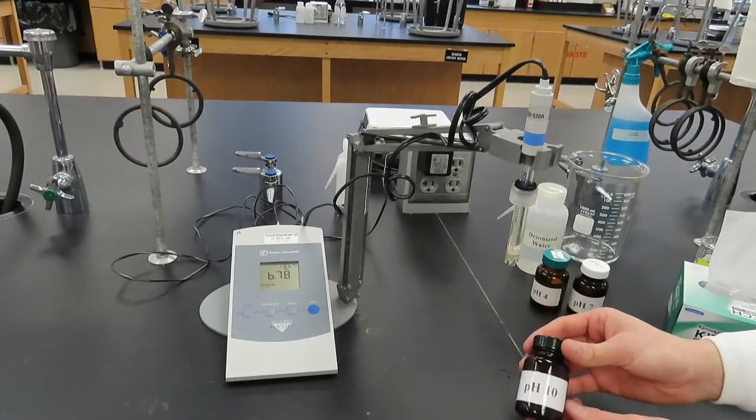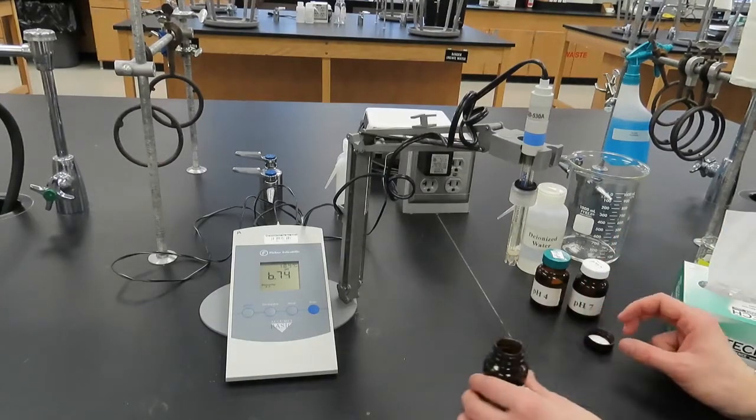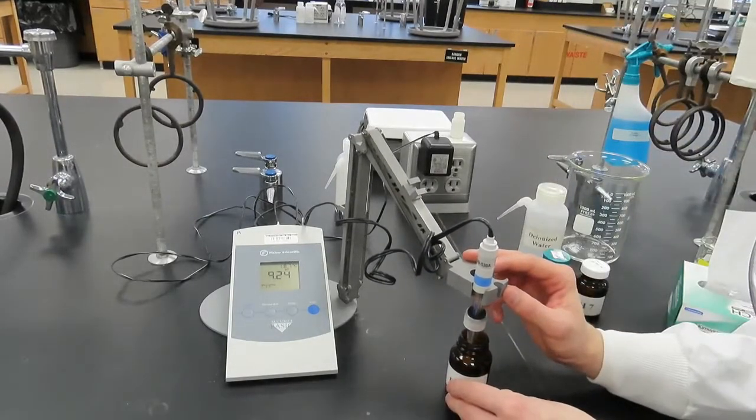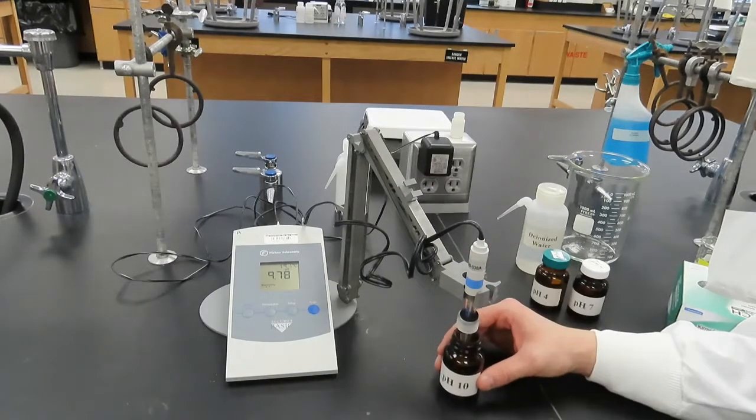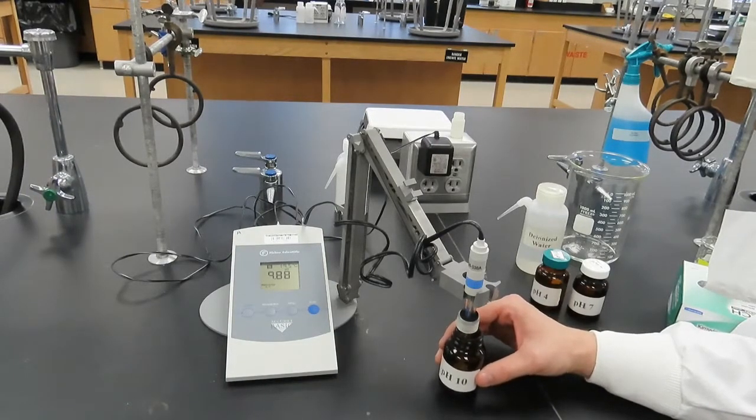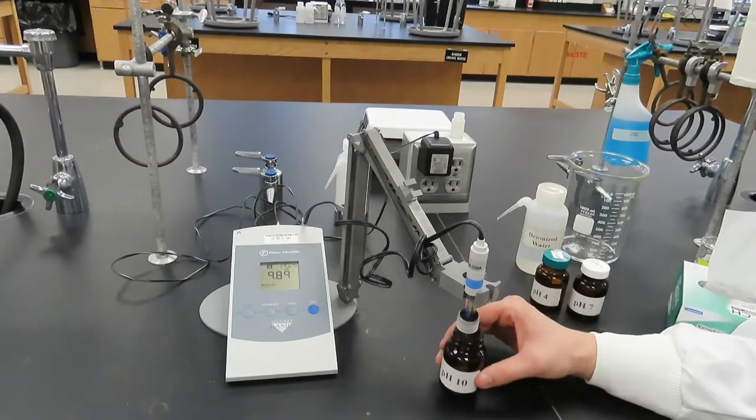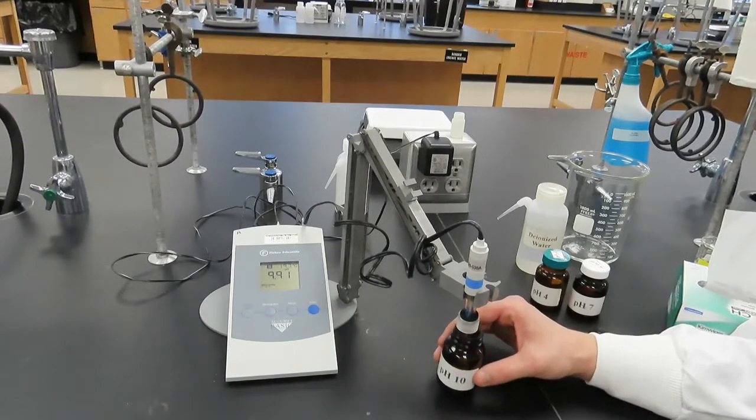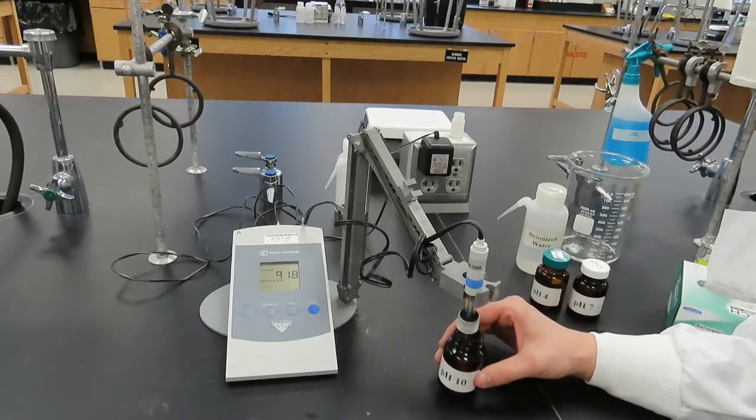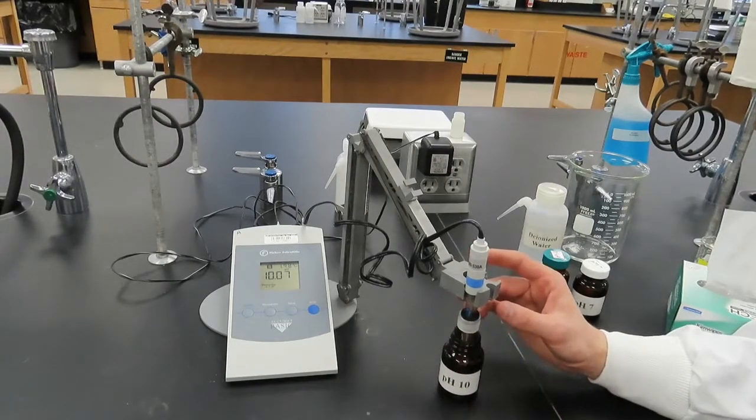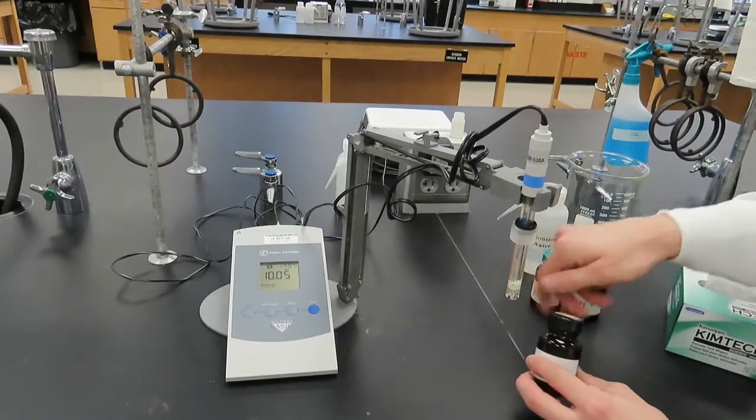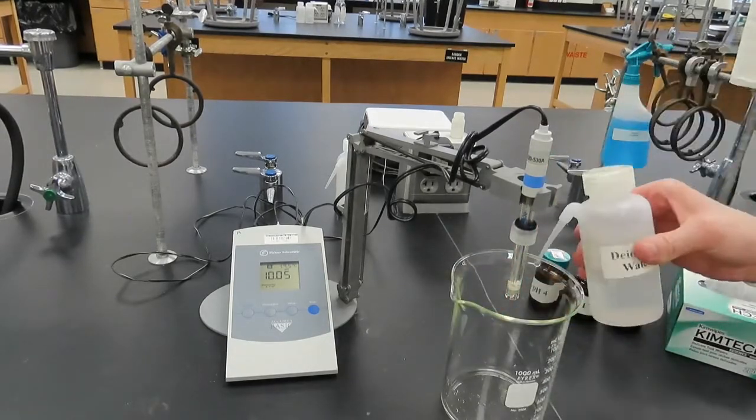Finally, we will repeat this process once more with a buffer solution of pH 10. When the pH value stabilizes, press the Standardize button once more while continuing to swirl the pH 10 buffer solution. If everything is okay, the pH meter will display good electrode. Remove the electrode from the pH 10 buffer solution, rinse, and dry it.